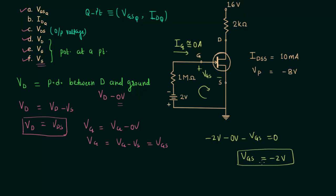This is the answer to part A: VGSQ equals minus two volts. Since the answer to part A is the same as part E, VG is also equal to minus two volts. To represent VGS as the coordinate of the Q point we write Q as a subscript, so VGSQ equals minus two volts.